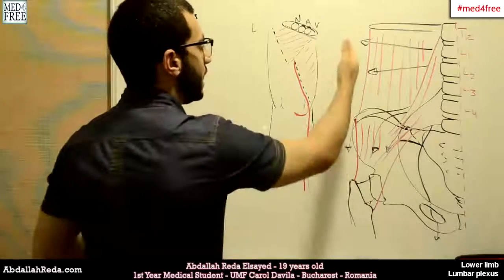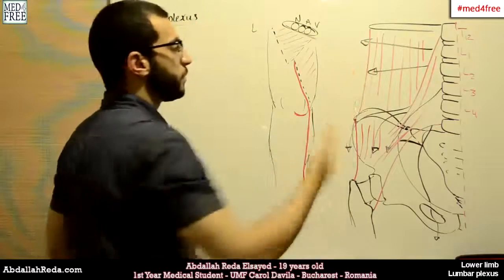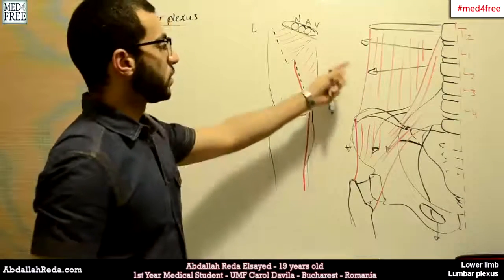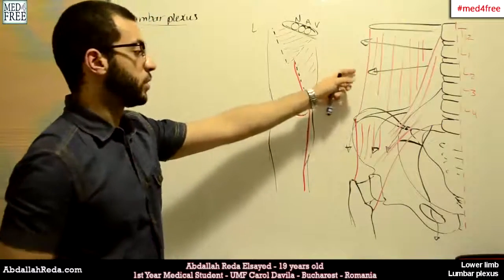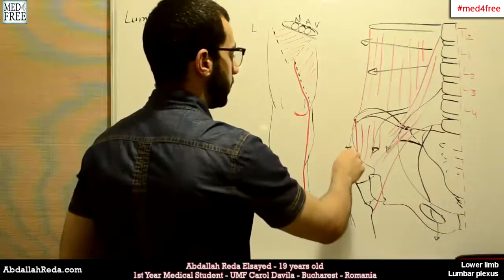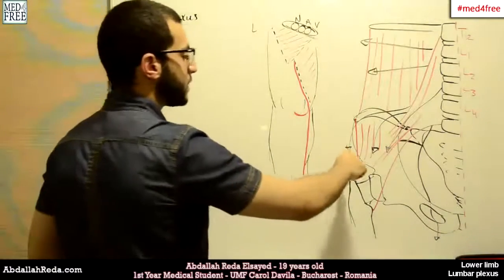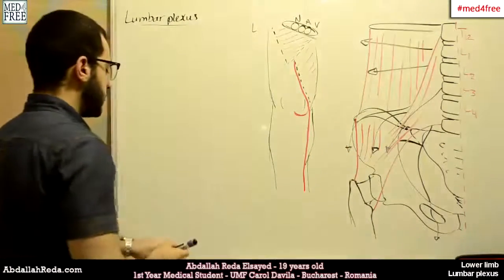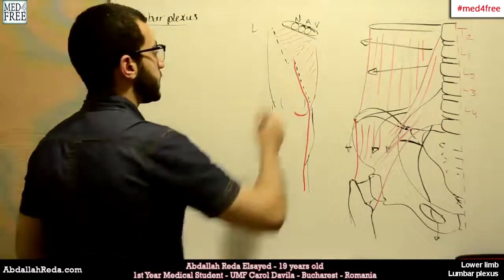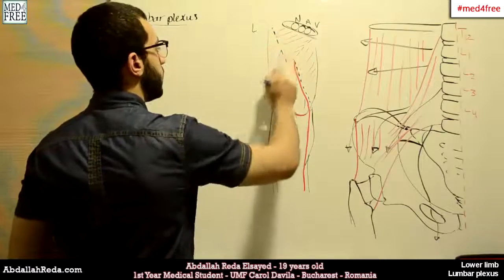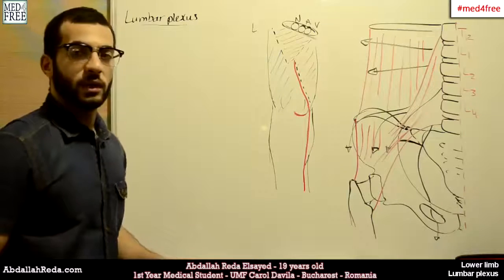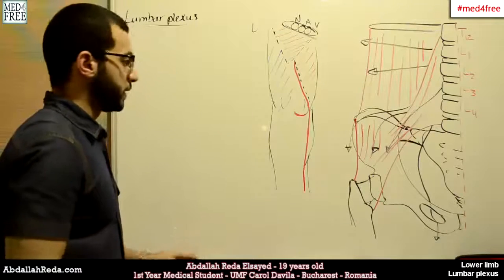The ilioinguinal nerve gives branches that innervate the base of the skin of the penis or the labia majora. Finally, the lateral femoral cutaneous nerve — also called the lateral cutaneous femoral nerve — innervates the skin of the lateral aspect of the thigh.